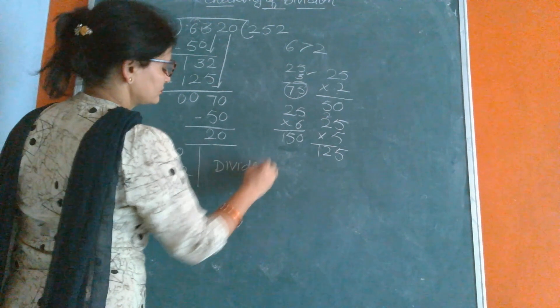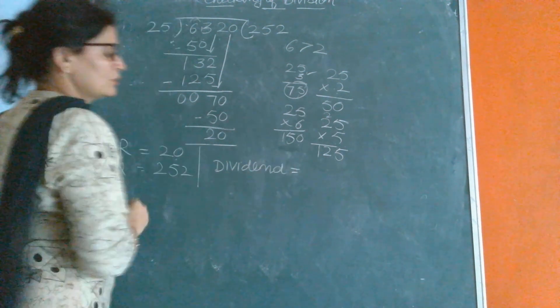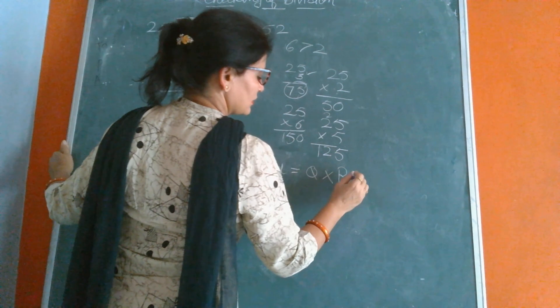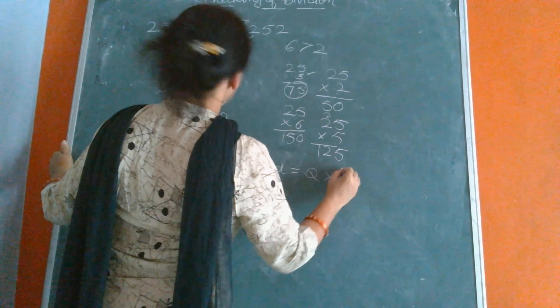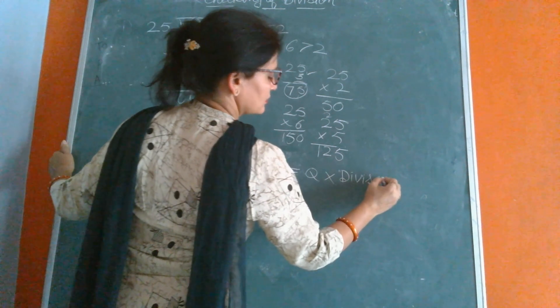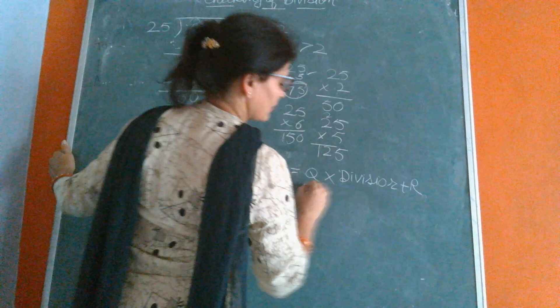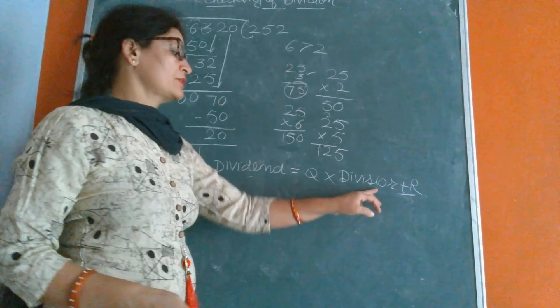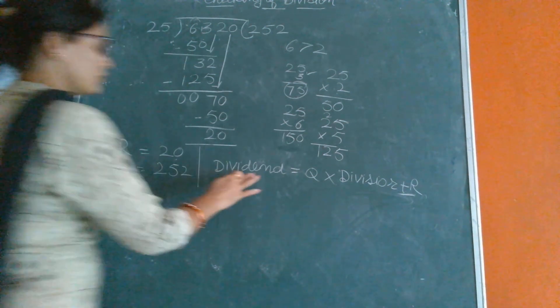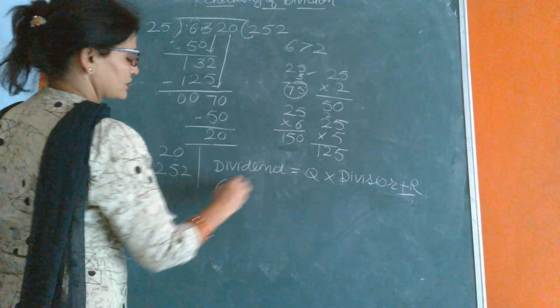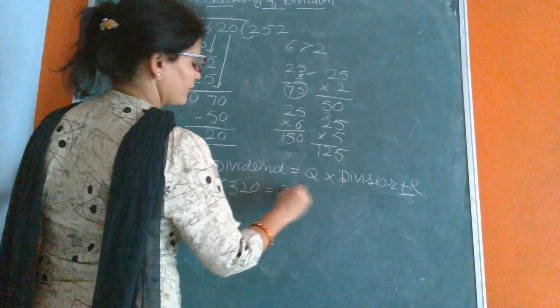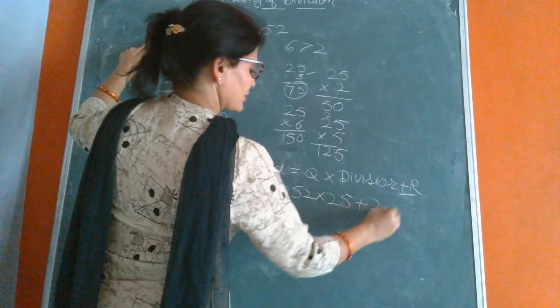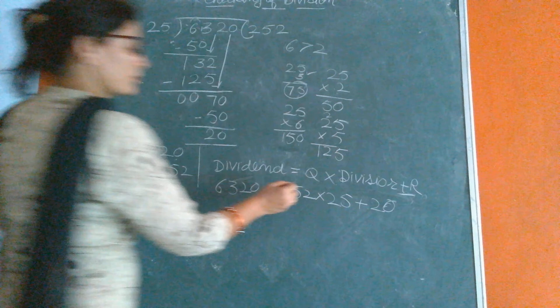This is the formula for checking. Dividend equals quotient multiplied by divisor plus remainder. This is the formula of checking. Now what is dividend here? 6320. What is quotient? 252, multiply by 25. Divisor is 25 and remainder is 20. First we will do multiplication of these numbers.